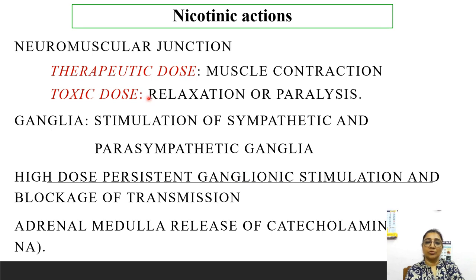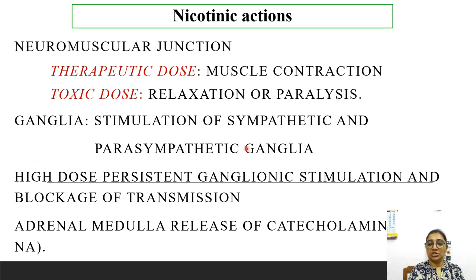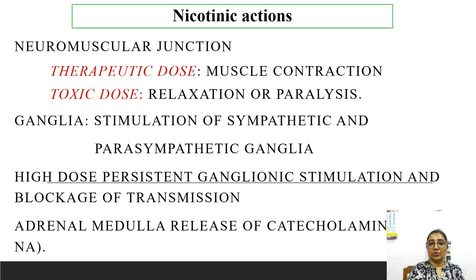Nicotinic receptor actions: at the neuromuscular junction, therapeutic doses cause muscle contraction; at toxic doses, relaxation and paralysis of muscle occur. At the ganglia, stimulation of sympathetic and parasympathetic ganglia occurs; at high doses, persistent ganglionic stimulation and blockage of transmission occurs. At the adrenal medulla, catecholamines like adrenaline and noradrenaline are released.